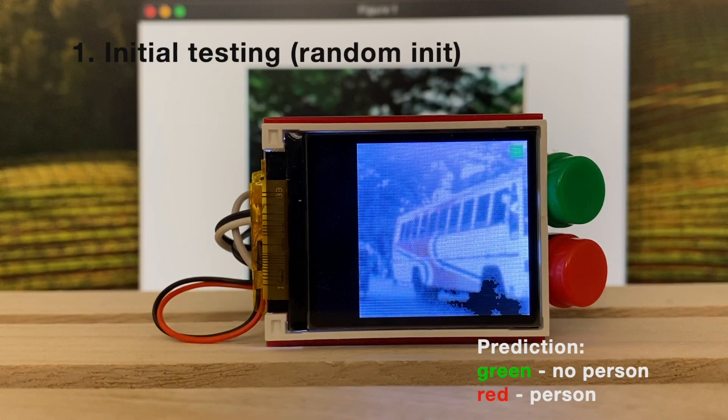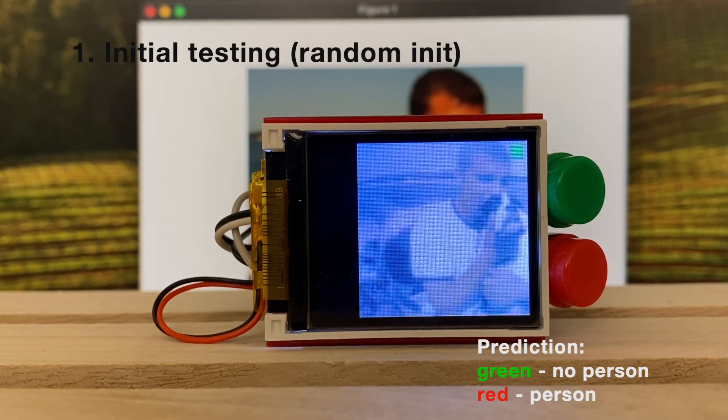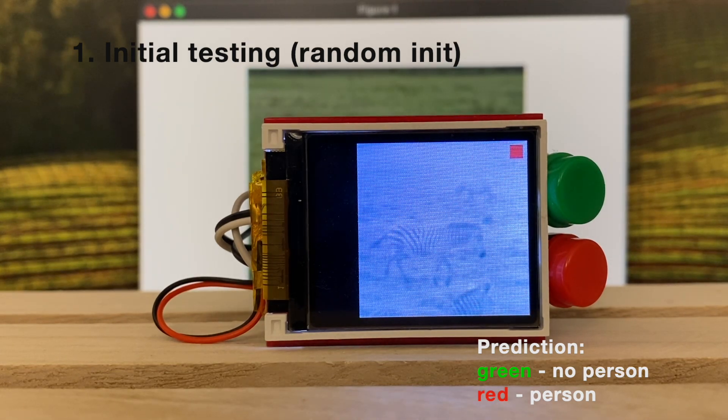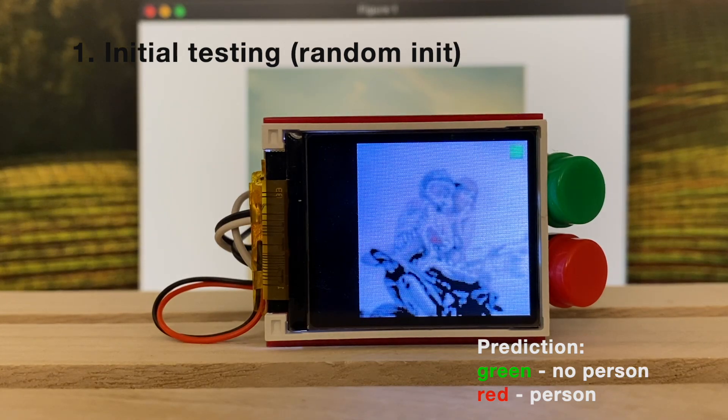We first randomly initialize the classifier to predict person or no person, which is the binary classification problem from VWW dataset. The prediction result is shown in the top right corner of the device. The red line indicates there is a person, and the green line indicates no person.